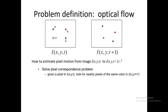To estimate pixel motion, we essentially solve the correspondence problem: given some pixel in I(x, y, t), we look for nearby pixels of the same color in I(x, y, t+1). Solving this is referred to as the optic flow problem. We need to look carefully at the two key notions: 'nearby' and 'same color'.